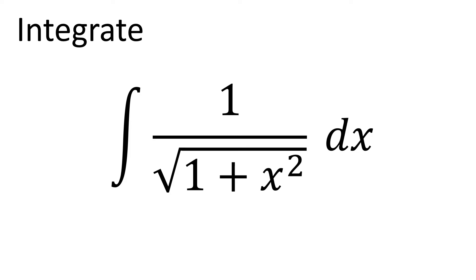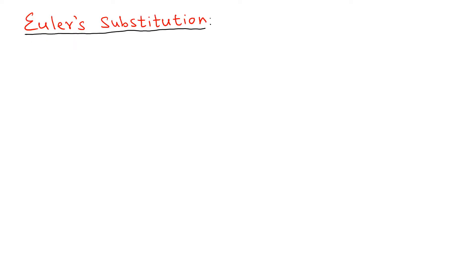The substitution we use is what we call Euler substitution. We're going to start with a special kind of substitution where we say the square root of 1 plus x squared equals t minus x. That is the substitution we're going to use — this is what we call Euler's first substitution. There are three types of Euler substitution, and we're using the first one here.